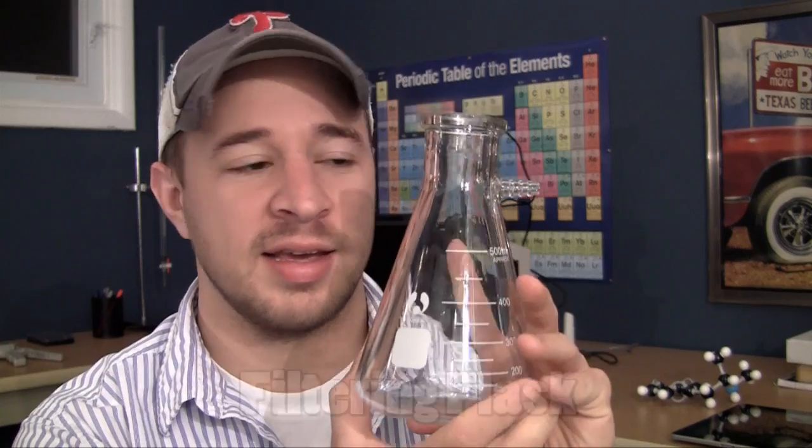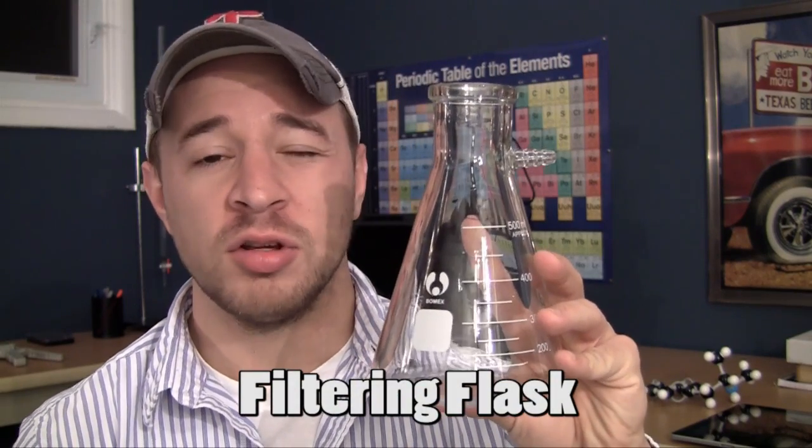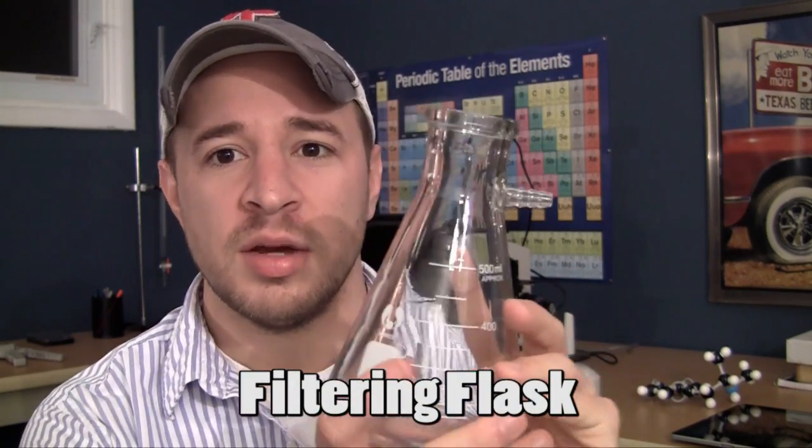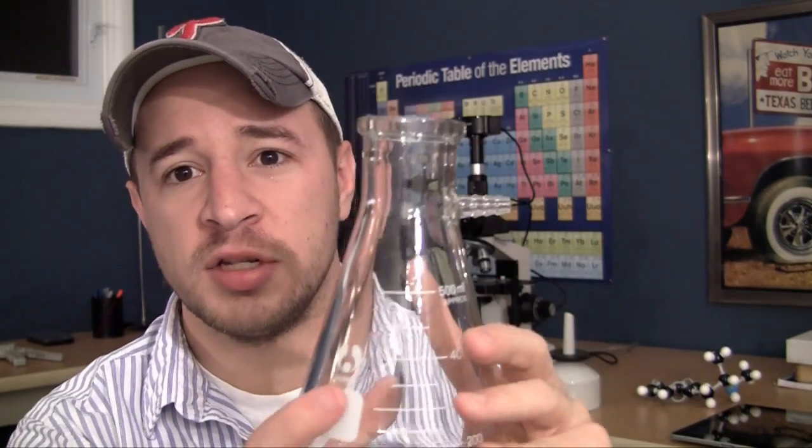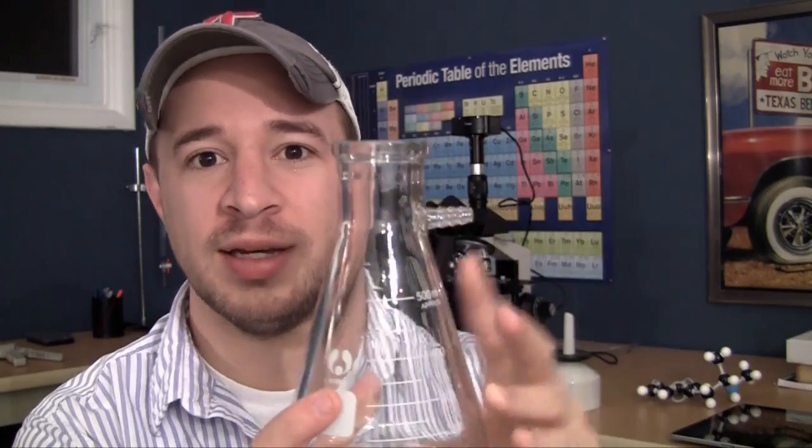What is going on guys, it's Bucky and in this video I want to talk to you guys about the filtering flask. Now a filtering flask looks a lot like an Erlenmeyer flask, but it has a little sidearm on the side right there. Now the sidearm is so you can hook up a vacuum tube to it, and that's pretty much what I'm going to be showing you guys later.